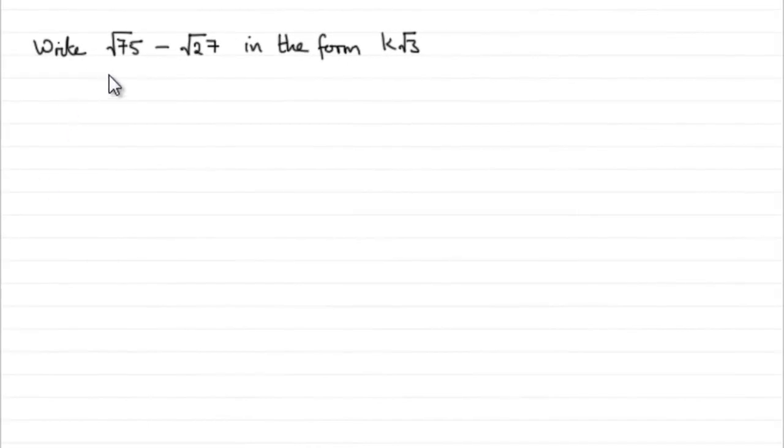And this question then, we've got to write root 75 minus root 27 in the form k root 3. So this is a typical question on simplifying surds.